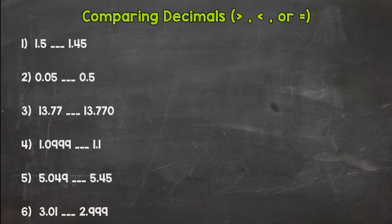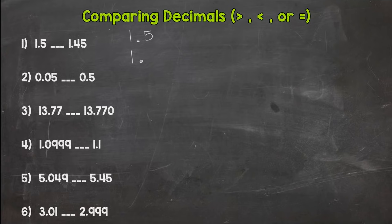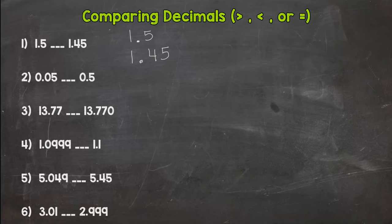Number one: we have one and five tenths compared to one and forty-five hundredths. When we compare decimals, we're going to line up our decimals to make sure we're comparing properly — lining up the decimals lines up all of our places. You should notice the top number only goes to the tenths and the bottom goes to the hundredths. From the equivalent decimals video, you know you can add a placeholder zero to the right of the five so both numbers go to the hundredths place.